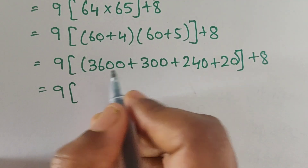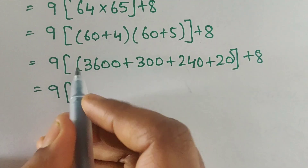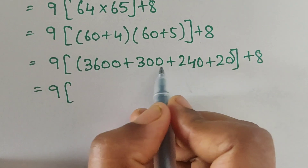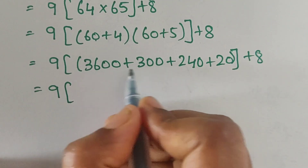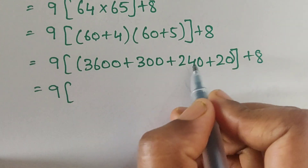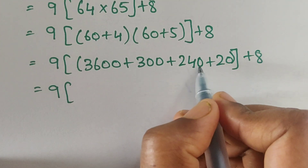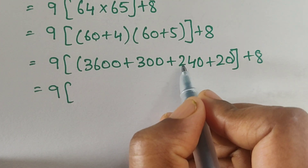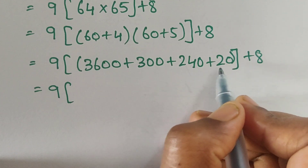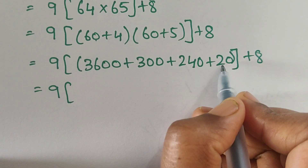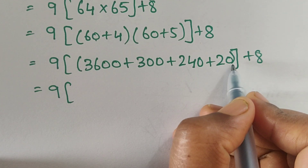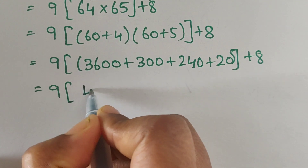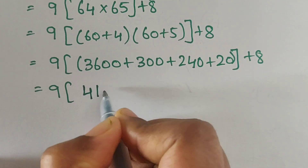Adding all terms together: 3,600 plus 300 plus 240 plus 20 gives us 4,160. So 64 times 65 equals 4,160.